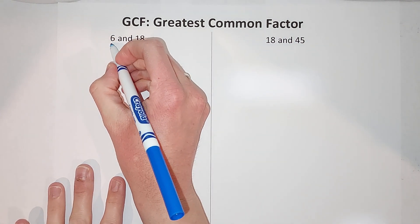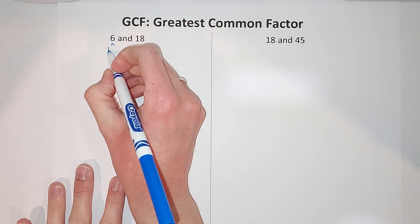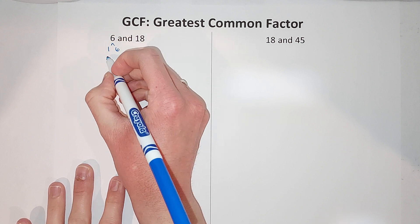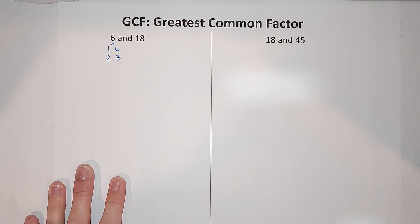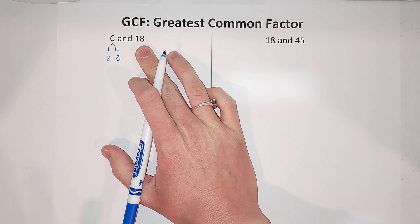So the factors of 6 are 1 and 6, because 1 times 6 is 6, and 2 and 3. Those are the factors of 6.